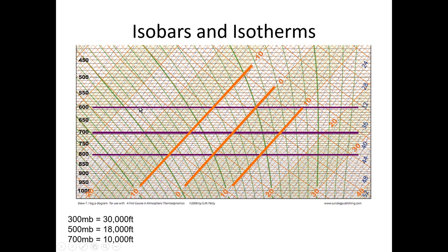I'll start out with the isobars and isotherms. Isobar means lines of constant pressure. Over here on the left, there's numbers ranging from 1,000 all the way up to 0 — these represent millibars. Millibars are a measurement of pressure, and you can also think of it as altitude. At sea level it's about 1,000 millibars. At 300 millibars it's about 30,000 feet, 500 millibars is 18,000 feet, and 700 is 10,000 feet.